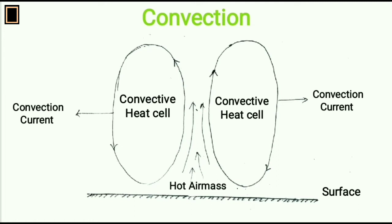In convection, air masses are circulated from lower to upper part of atmosphere. And it is known as convection current. The inner part of convection current is known as convective heat cell.